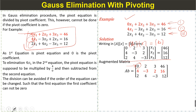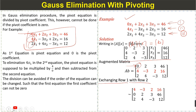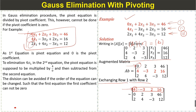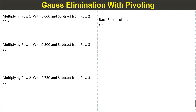To do pivoting, we change the order of the rows by exchanging row 1 with row 2. Now the pivot equation has a non-zero pivot element, and we apply the Gauss elimination method to eliminate the below-diagonal terms.